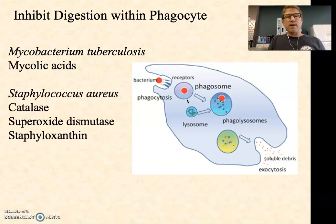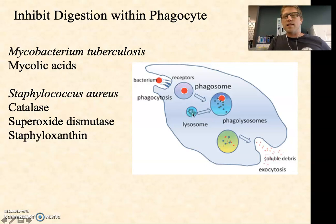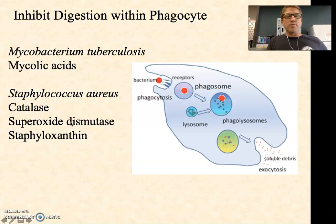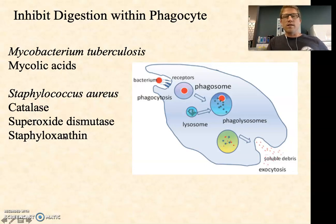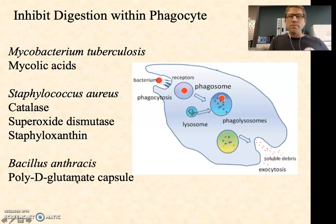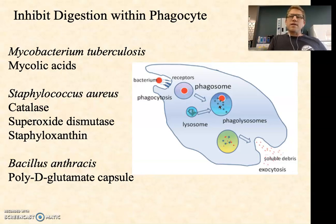Even if the phagolysosome fuses, some bacteria are protected from digestion. Mycobacterium has mycolic acids on its surface — these are waxy and interfere with digestion, making it hard for digestive enzymes and hydrogen peroxide to attack the mycobacterium. Staph aureus has catalase that inactivates hydrogen peroxide in the lysosome, along with superoxide dismutase that inactivates reactive oxygen species, and a pigment called staphyloxanthin — where it gets its aureus or golden name — which also absorbs reactive oxygen species. Bacillus anthracis has a capsule made of polyglutamate that is very difficult to digest inside a phagolysosome.